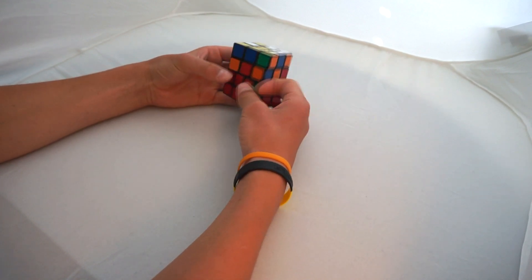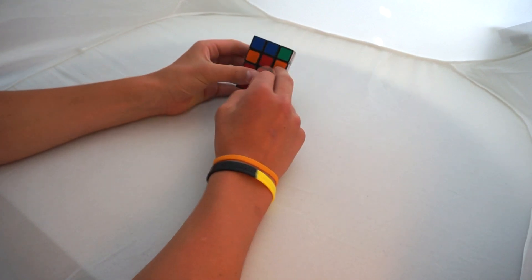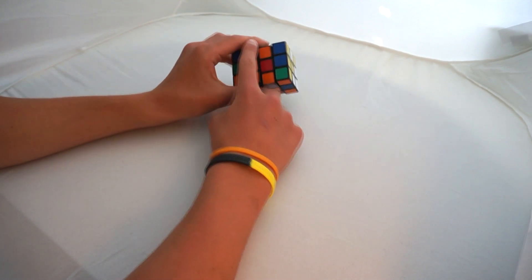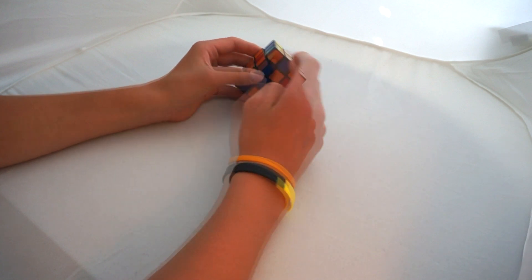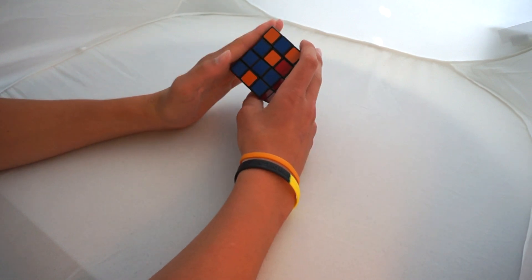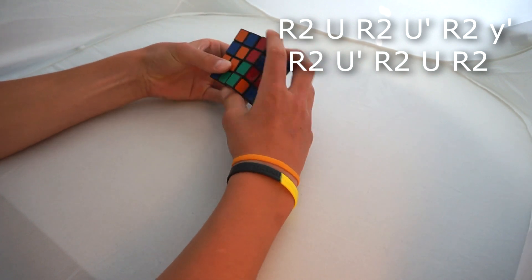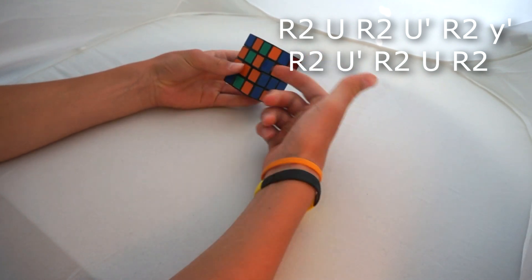Okay, so once all the edges are in, you should end up with two corners the same color. So just put them on the same color and apply another algorithm, but have them on your left side. Once you apply the algorithm...